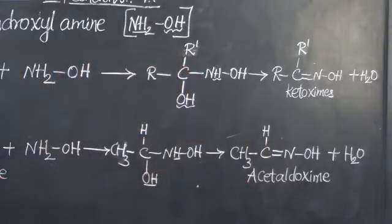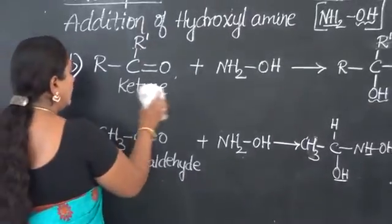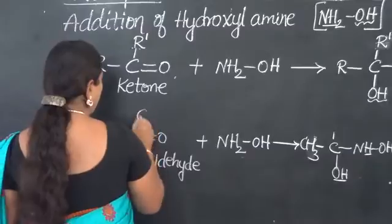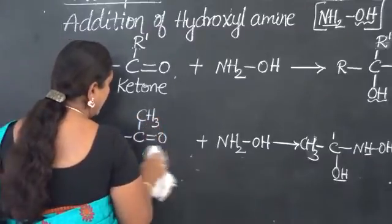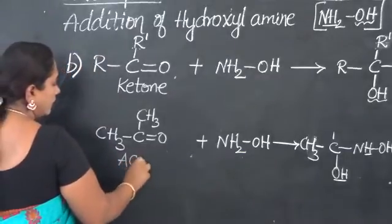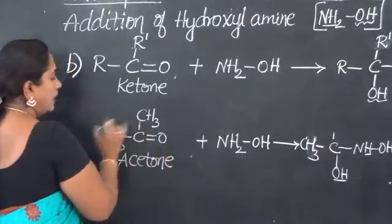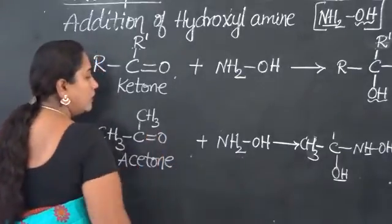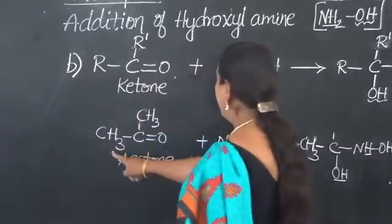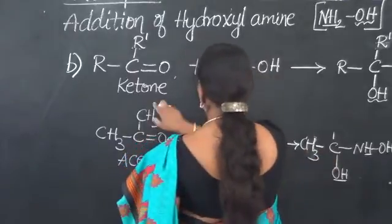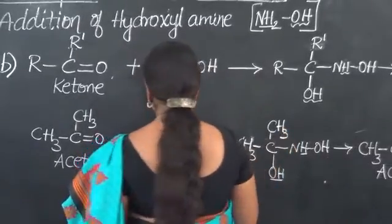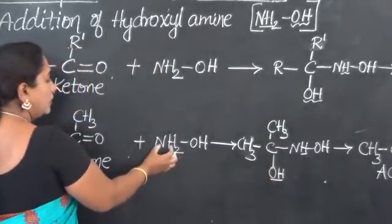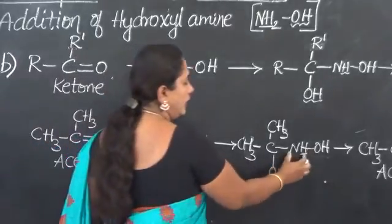Let us understand this further with an example. The common example we consider is acetone. The formula for acetone is CH3COCH3 — it is a symmetrical ketone because both R groups are the same methyl group CH3. Acetone adds with hydroxyl amine in the place of the double bond. The addition product has CH3 on both sides of carbon; one H combines with oxygen to link as OH, and the remaining group is NH linked with OH.